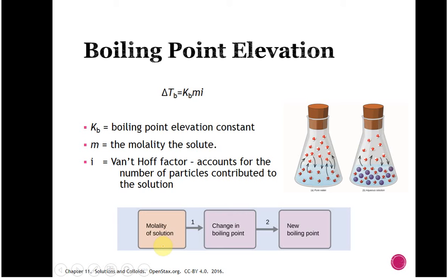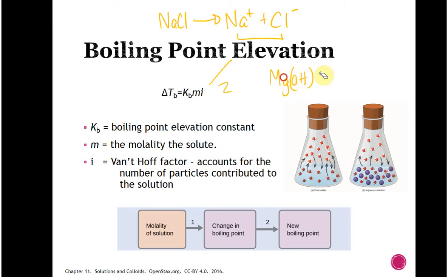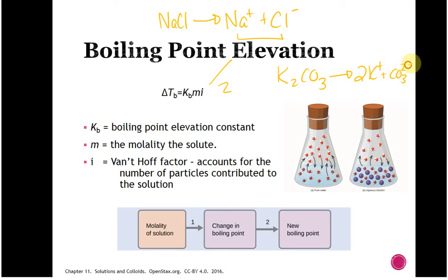The van't Hoff factor accounts for the number of particles in solution. For NaCl, which dissociates into Na⁺ and Cl⁻, i = 2. For K₂CO₃, which gives two potassium ions and one carbonate, i = 3. For non-ionizing substances like glucose or ethanol, i = 1 — whatever you put in is the same number of particles.